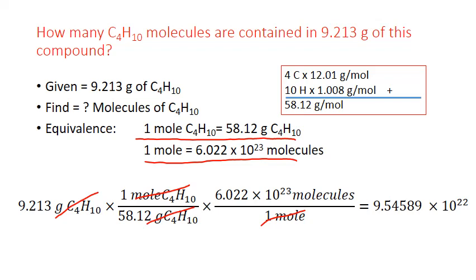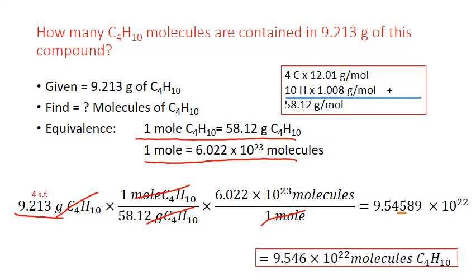And, of course, to round this to an appropriate decimal place, we simply look at our initial number again. It's got four significant figures. We have to round our final answer to four significant figures. In this case, 9.5458 rounds up to 9.546 times 10 to the 22nd molecules of butane.